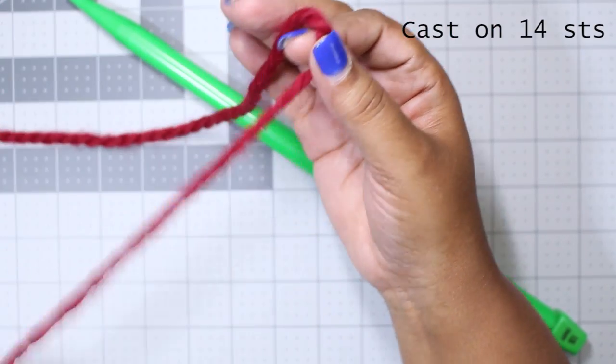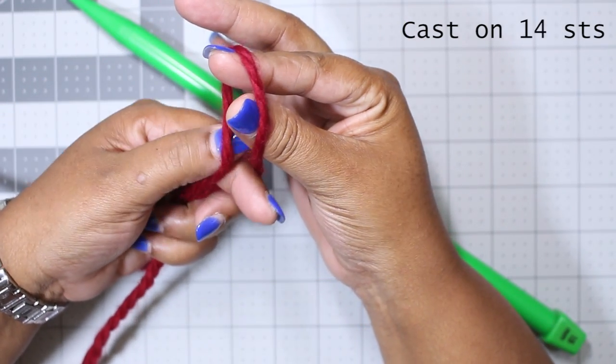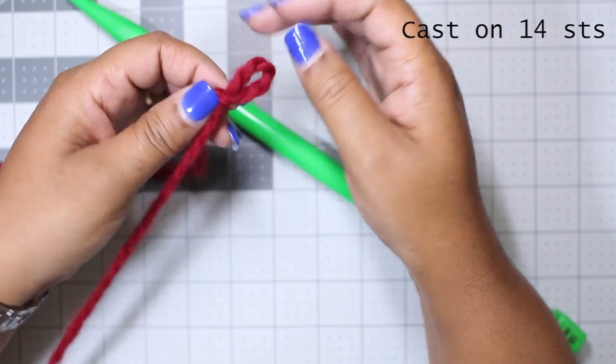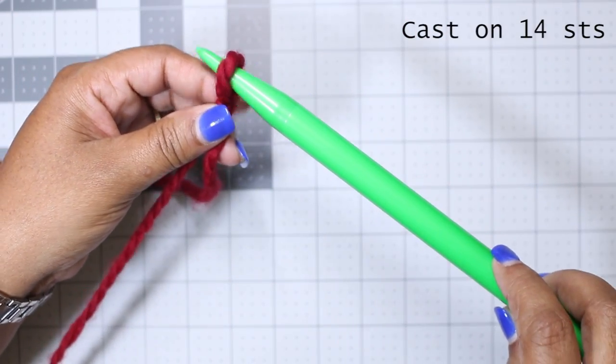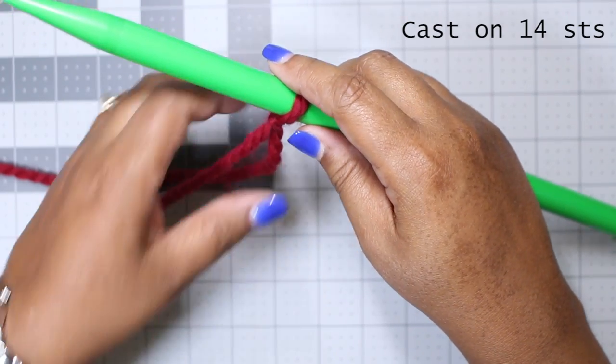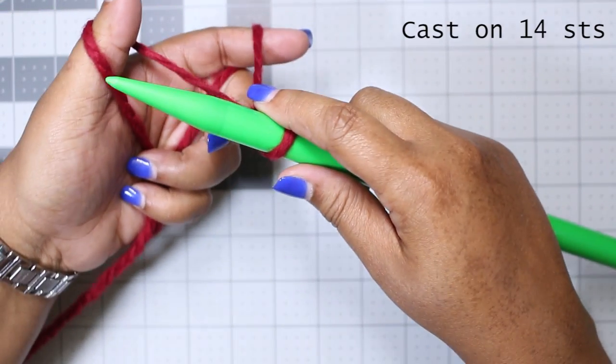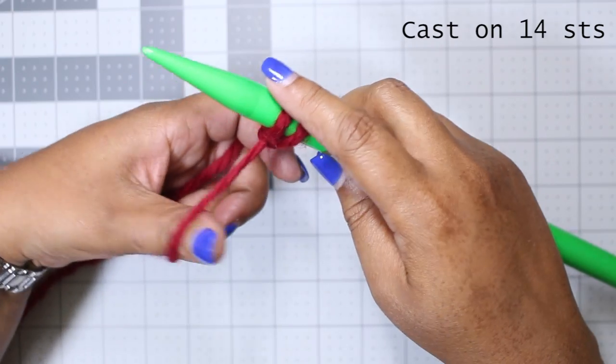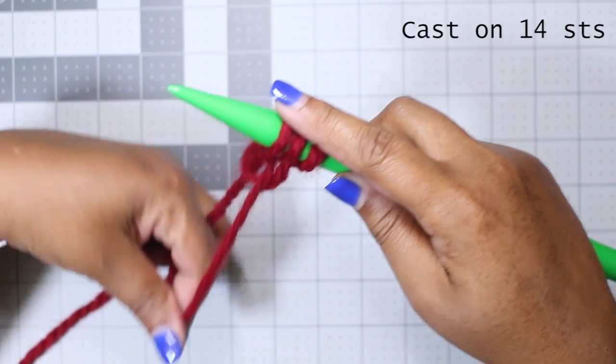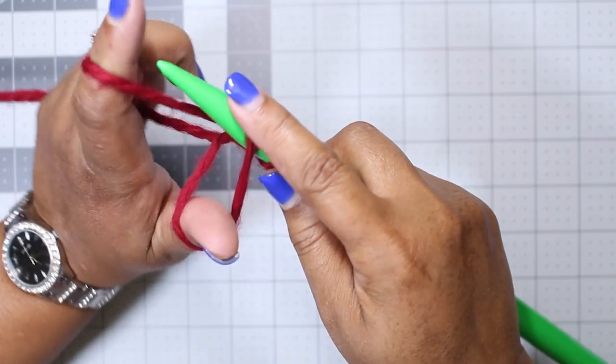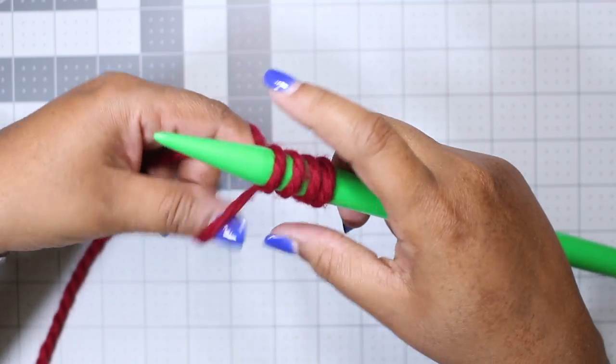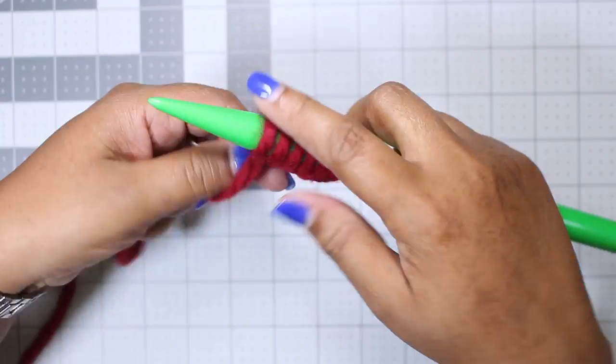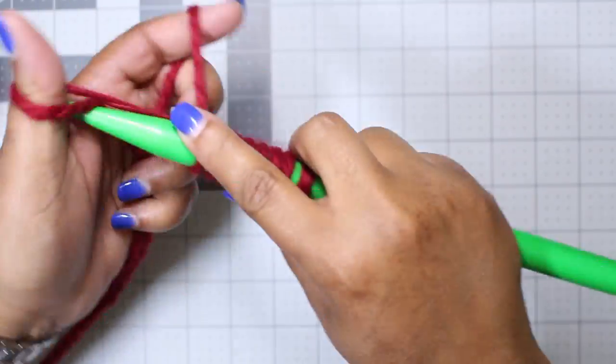We're going to start by casting on 14 stitches. I am going to use the long tail cast on for this cowl, but you can use any cast on that you feel comfortable with. I will leave a link to my long tail cast on video in the upper right hand corner in case you need a refresher. And as I say in all of my videos, don't forget to count the number of stitches for your cast because you just want to make sure that you have the right number and not have to start over.